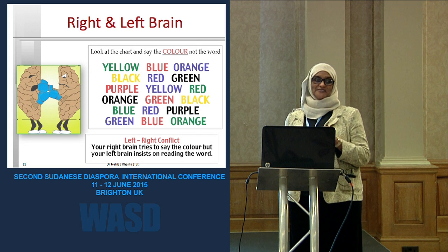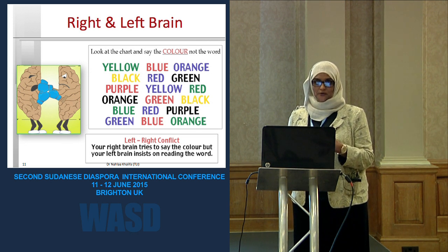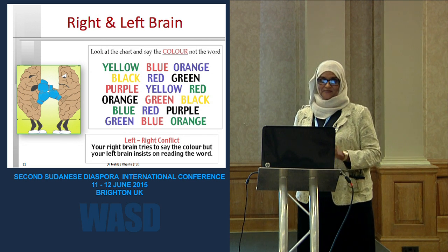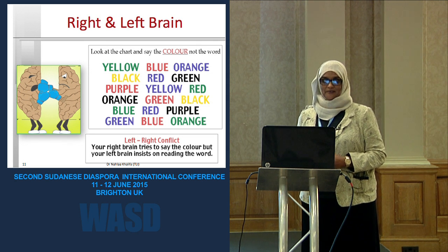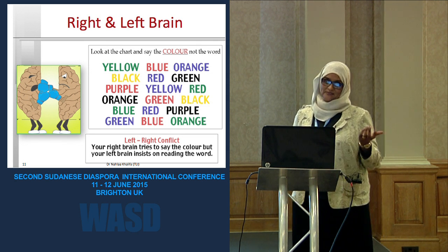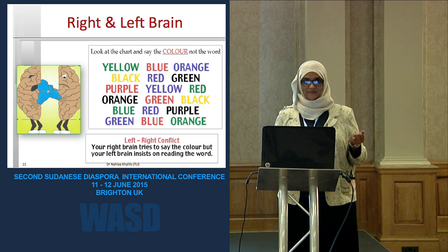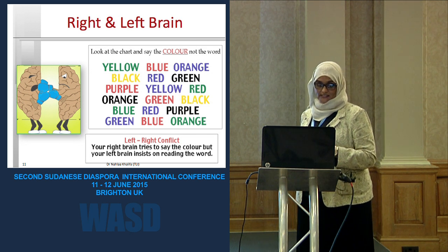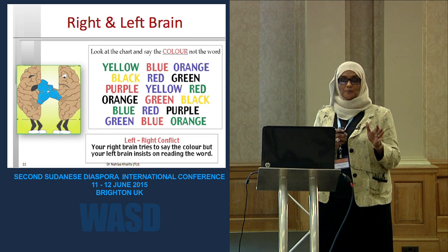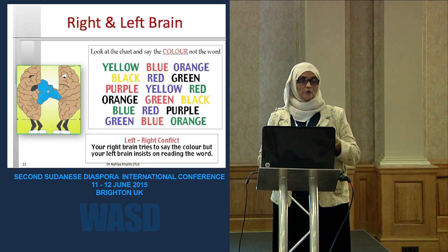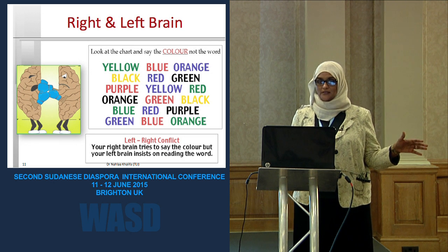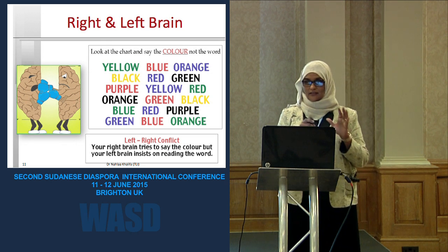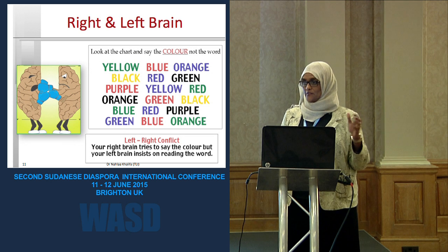Now, reading just the words: yellow, blue, orange, black, white, green, purple, yellow, red, orange, green, black, blue, red, purple, green, purple, orange. It is very easy to read the words. But at first, your right brain tries to say the color and your left brain tries to say the word. This is the conflict between the right and left brain — and this is exactly the way we currently deliver information to our students. We just enhance the left side of the brain.